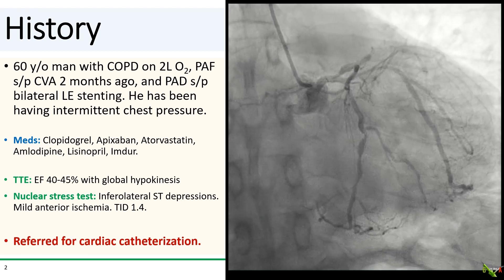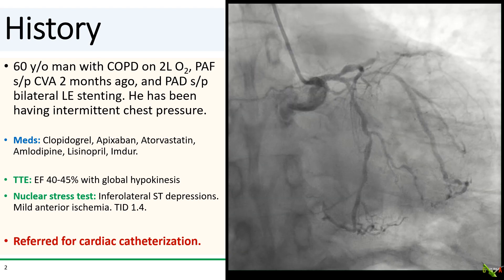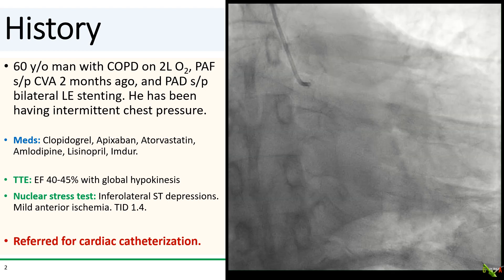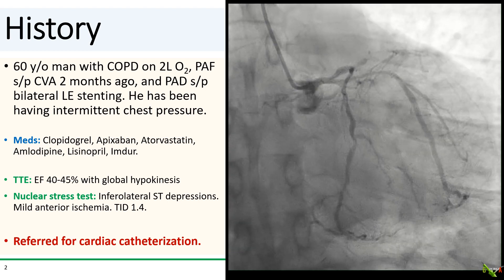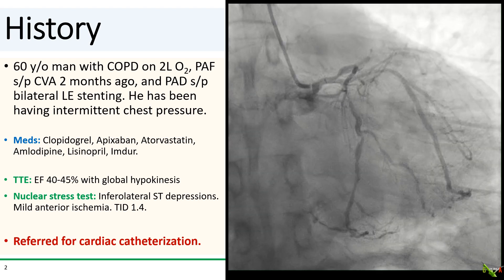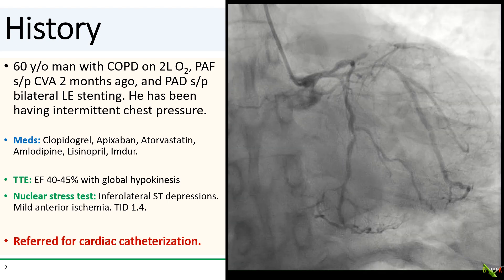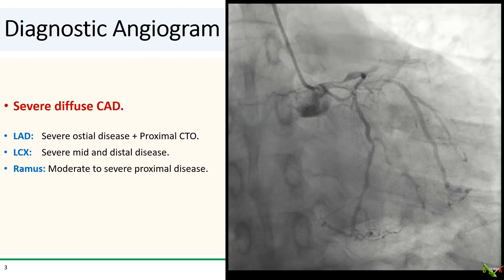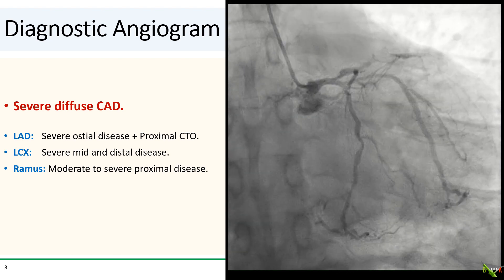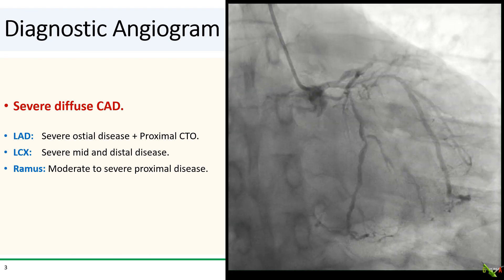Nuclear stress testing showed only mild anterior ischemia. However, there was transient ischemic dilatation and marked infralateral ST depressions, all concerning for possibly multi-vessel disease. So he was therefore referred for a cath, and what we see is severe diffuse coronary disease.